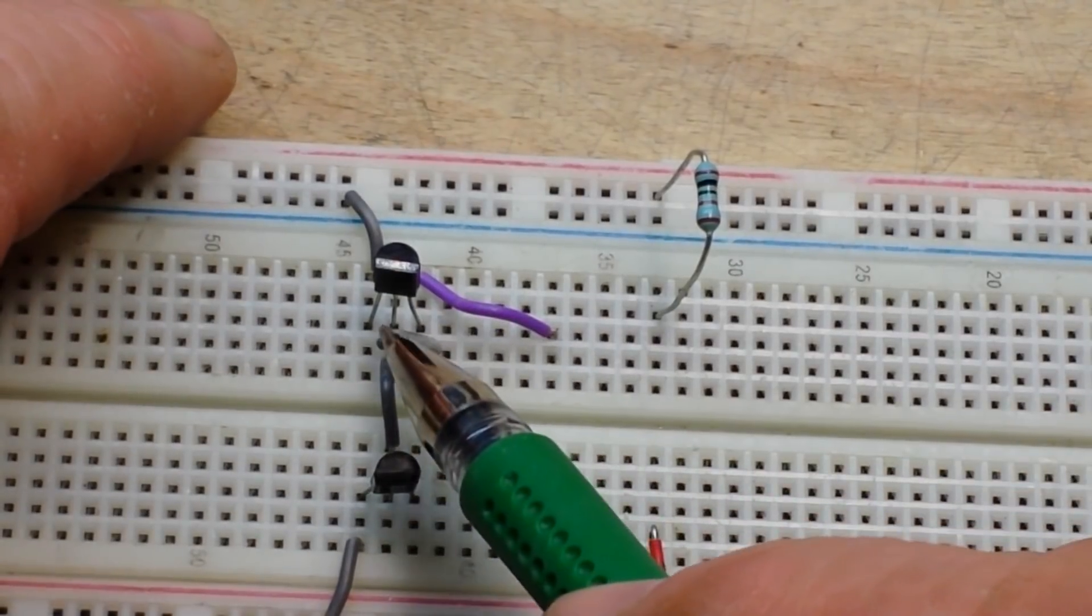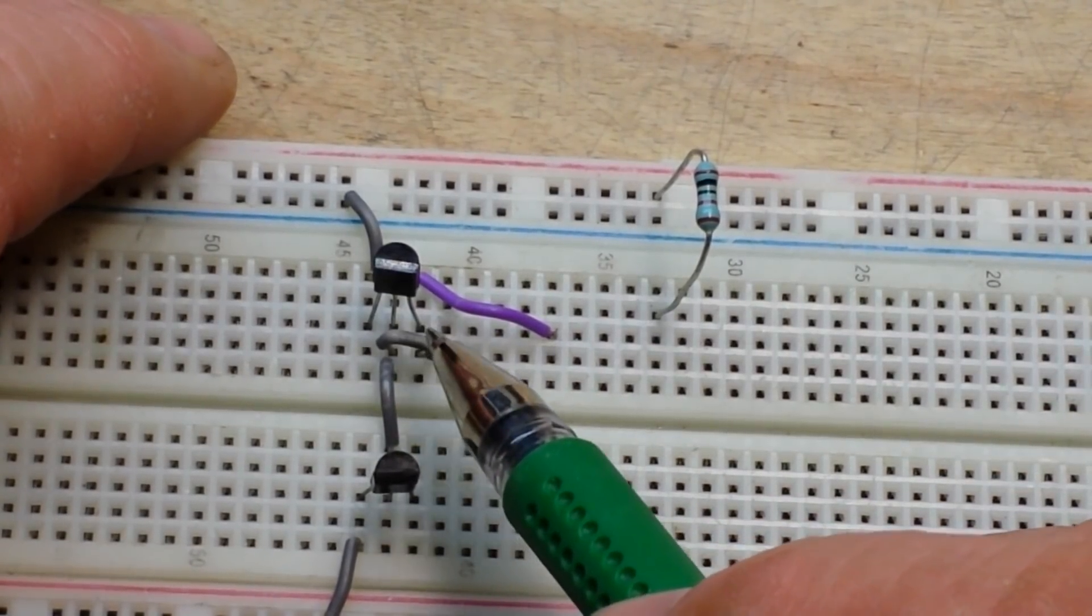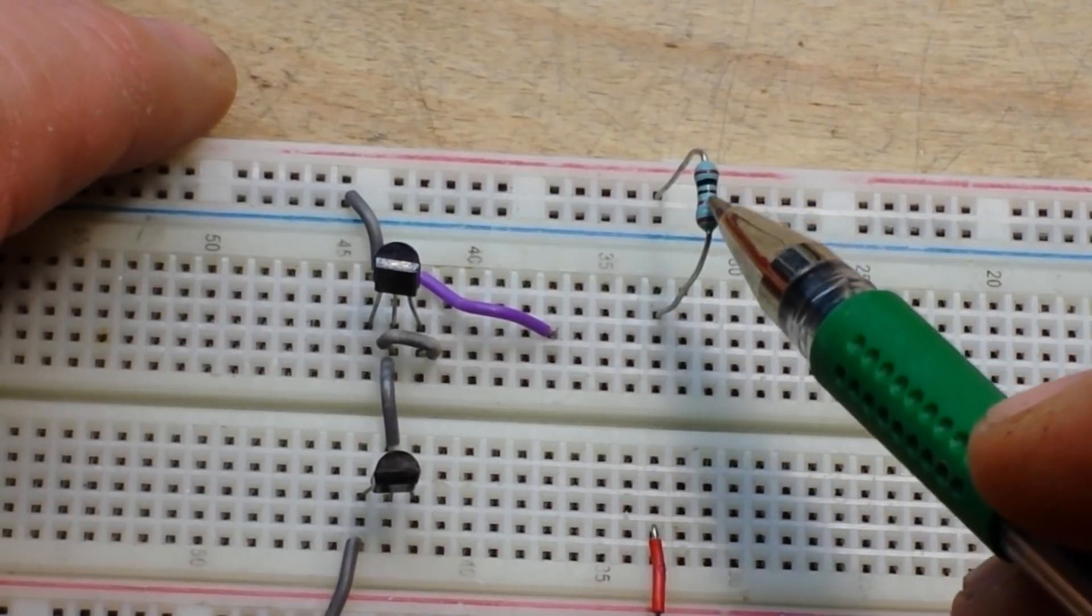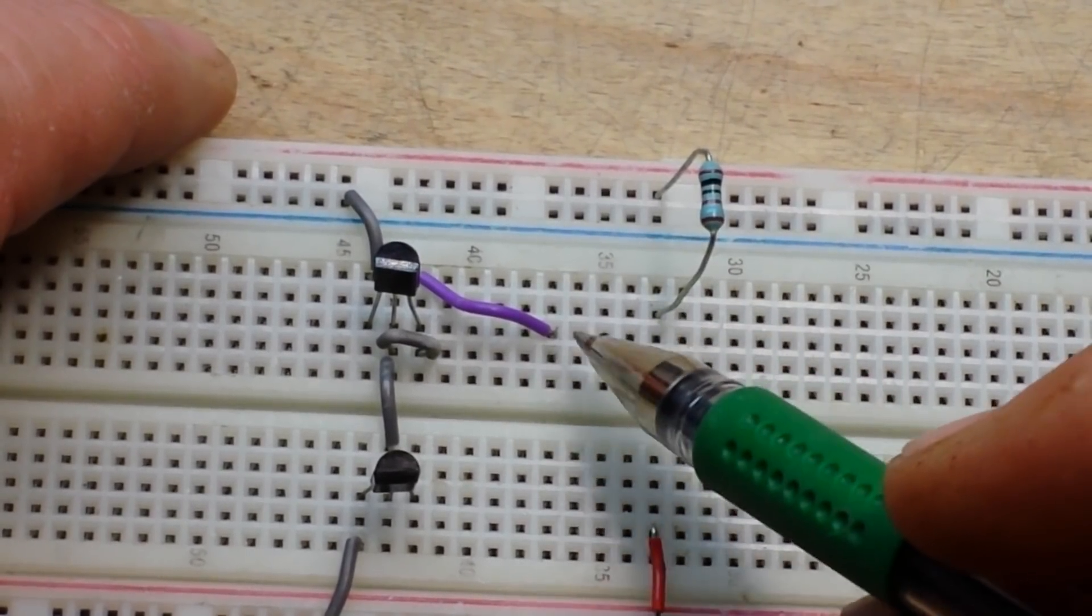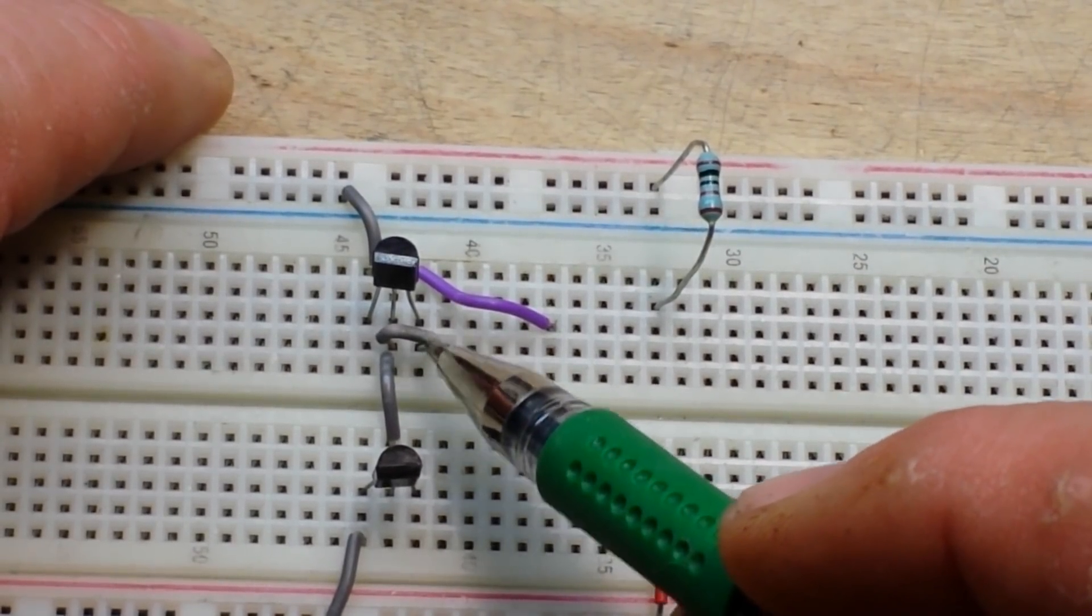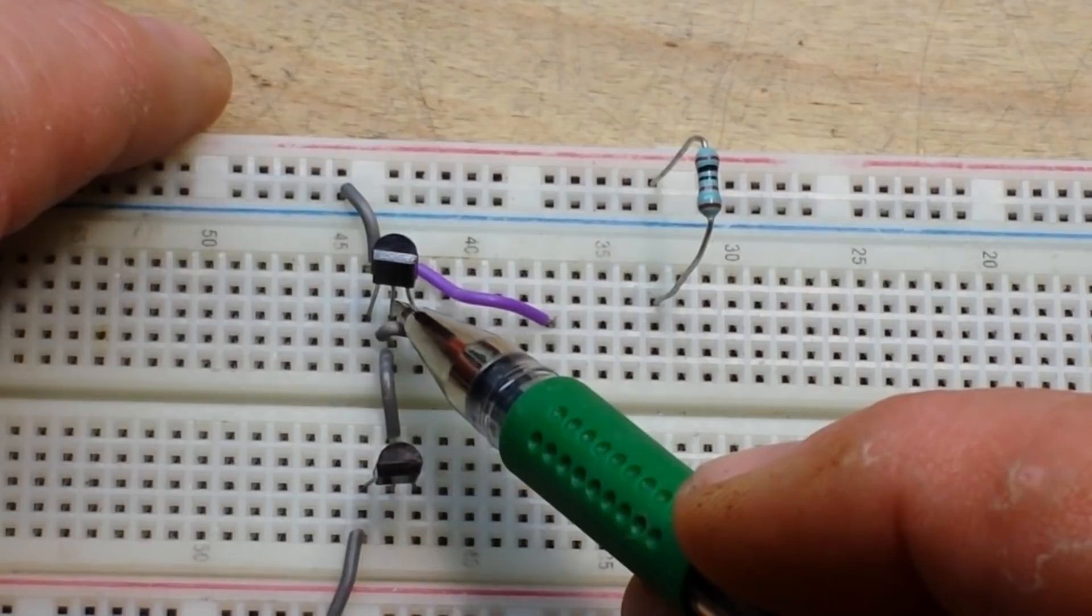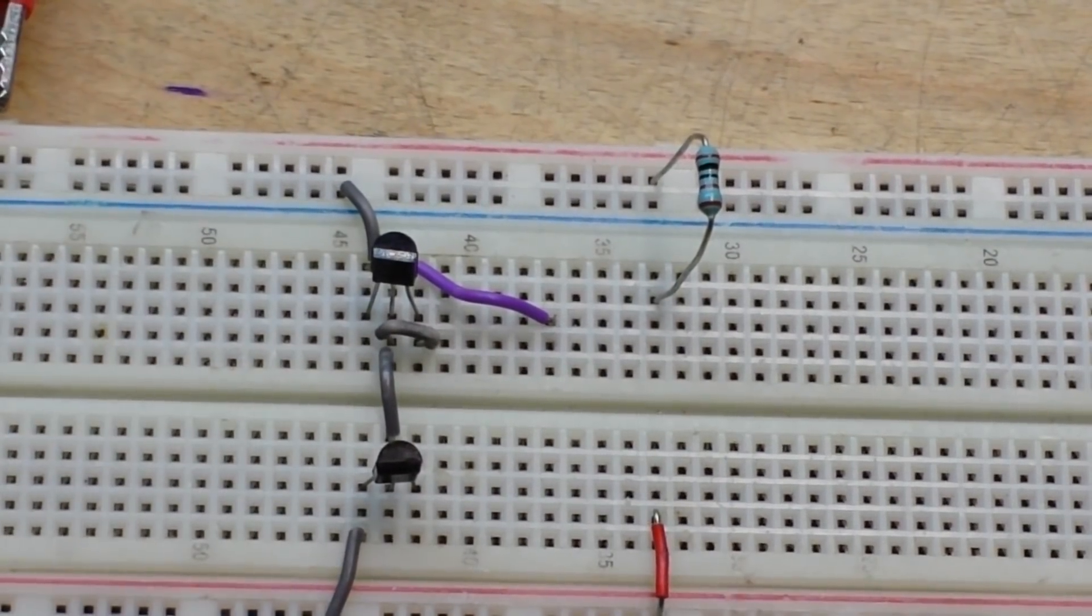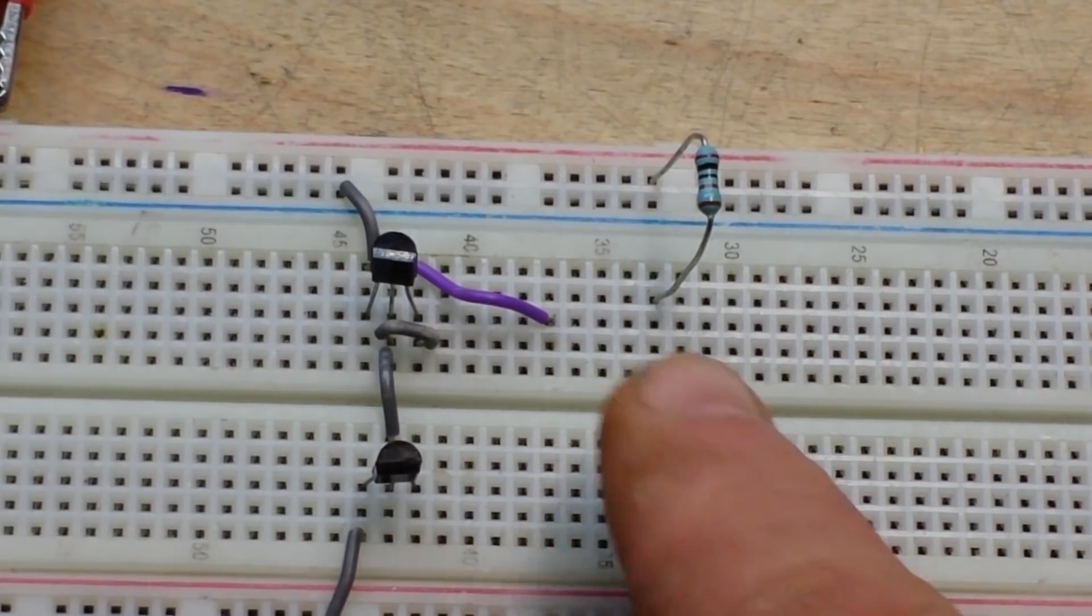So here is Q1 and it is set up emitter base collector. Here is that R1 coming from VCC across this purple jumper into the collector and then we have a jumper between the collector and the base which is biasing that transistor. Now, at the moment it is not hooked up there so we can measure the current. Let's take a swing over here and have a look.